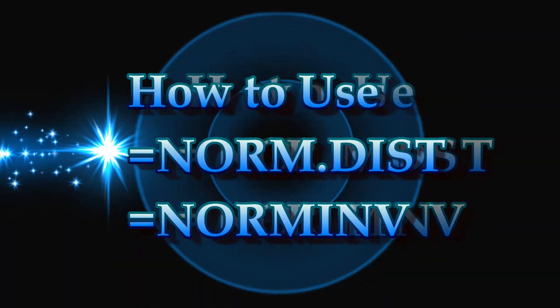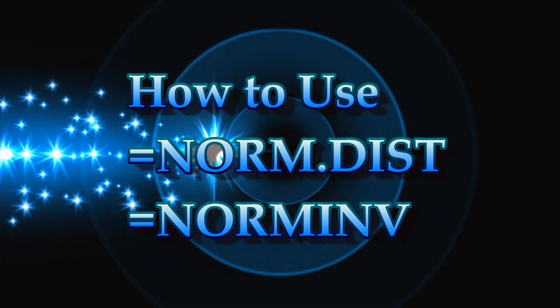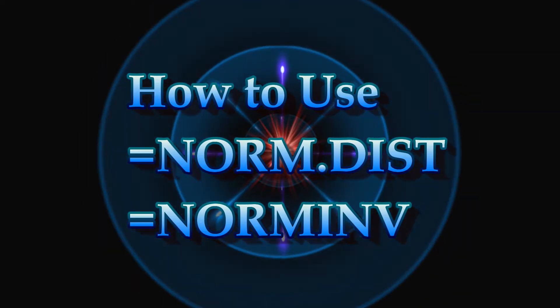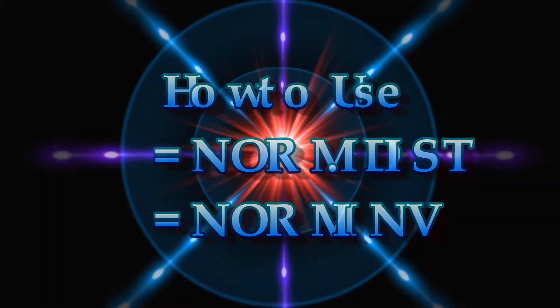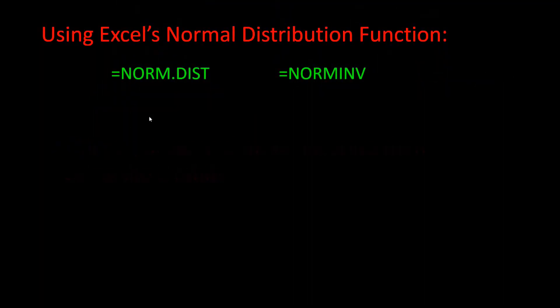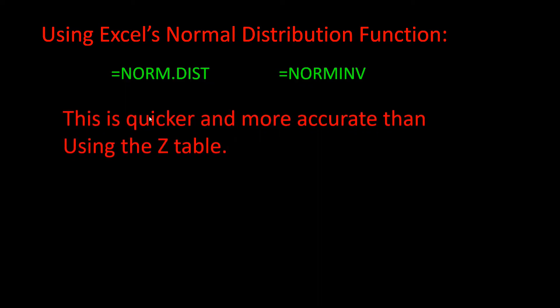Welcome. This tutorial shows how to use the NORM.DIST and the NORMINV functions in Excel to calculate normal probabilities. These Excel functions are more accurate and much quicker than using a z-table.